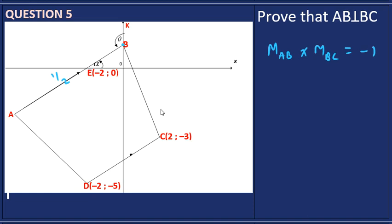Point B will be at coordinates (0, 1). We know y equals 1 because the equation of line AB is y = half x + 1, which we worked out in question three. When x = 0, y = 1. So that gives us the y-value for point B, and now we can calculate the gradient of BC.